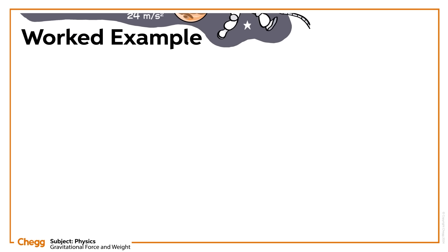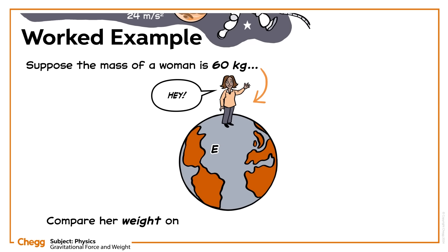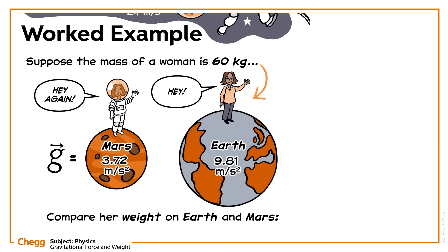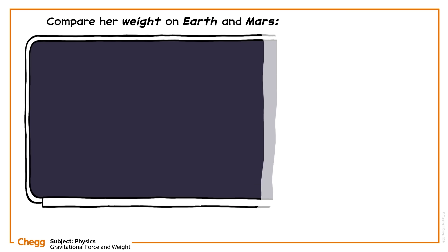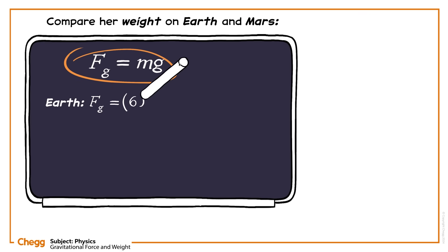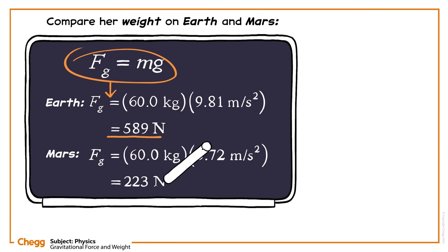Let's take an example. Suppose the mass of a woman is 60 kilograms. Compare her weight on Earth and Mars. Remember, the acceleration due to gravity on Earth is 9.81 meters per second squared and the acceleration on Mars is 3.72 meters per second squared. We know that the weight of an object of mass m is given as Fg equals mg. Inputting the values tells us that on Earth her weight is 587 Newtons, whereas on Mars she weighs much less, at 223 Newtons.